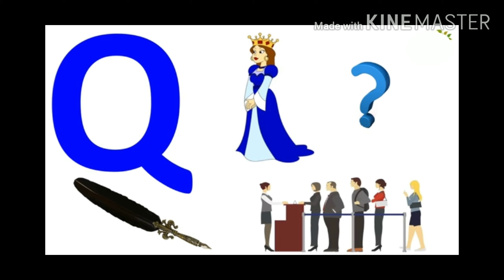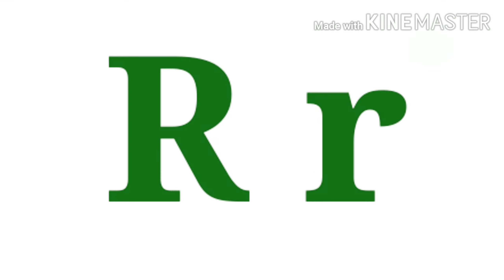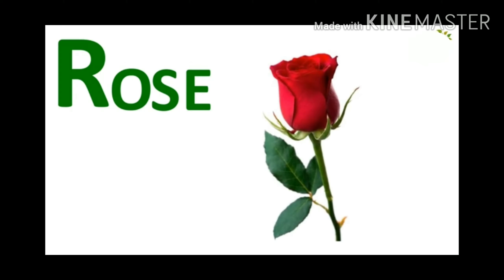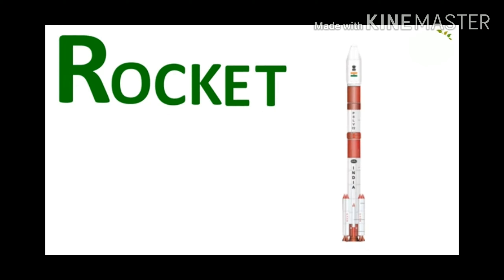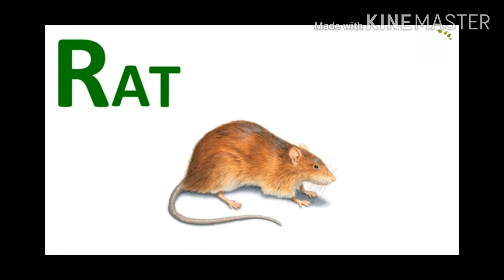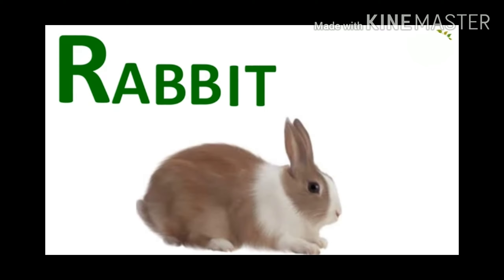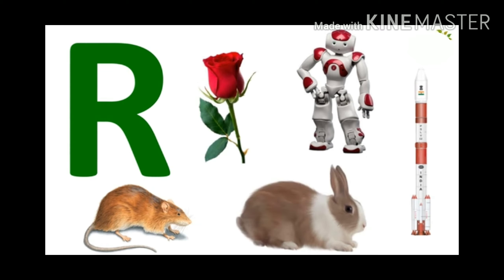After Q, letter R. This is the letter R. R for Rose. R for Robot. R for Rocket. R for Rat. R for Rabbit. Letter R has the sound R.